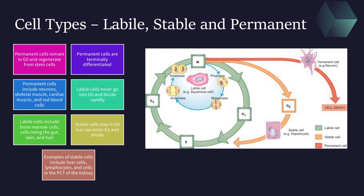As shown in this diagram here, we can see that there are labile cells, stable cells, and permanent cells. We're going to first talk about permanent cells. Permanent cells remain in the G0 phase and regenerate from stem cells. In other words, these cells are incapable of regeneration on their own, and they are considered terminally differentiated.